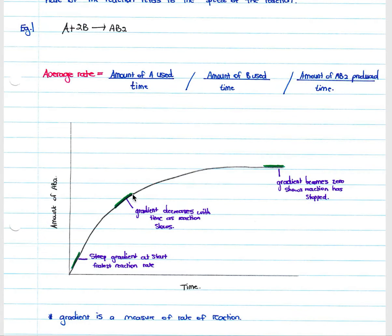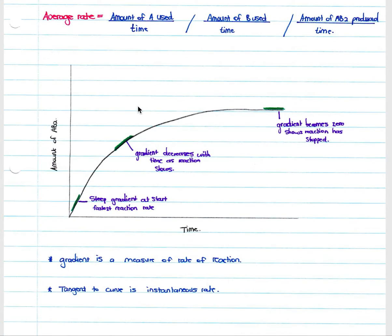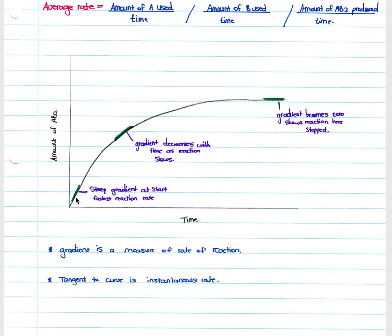As the reaction proceeds, the gradient decreases as reactants are used up and effective collisions become fewer. Eventually the gradient becomes zero, indicating the reaction has stopped because all reactants are consumed. This is not a reversible reaction, so it runs to completion. The gradient is a measure of the rate of reaction, and the tangent to the curve gives the instantaneous rate at any point in time.